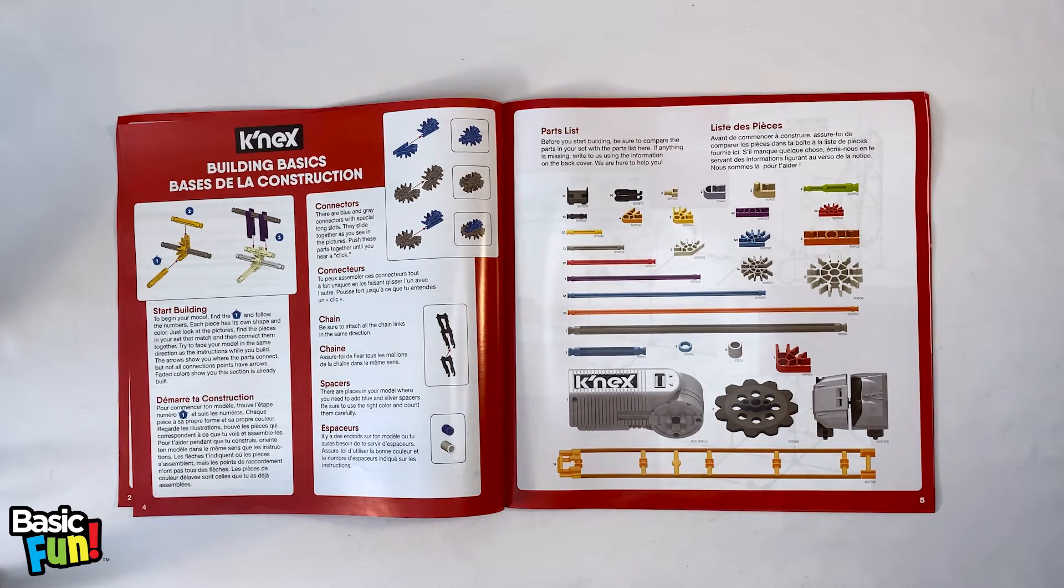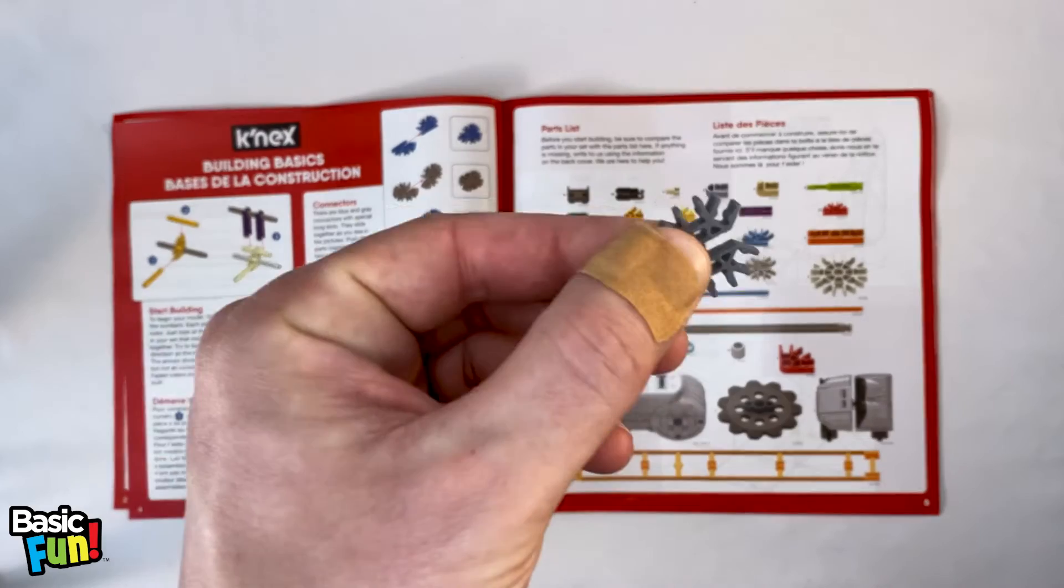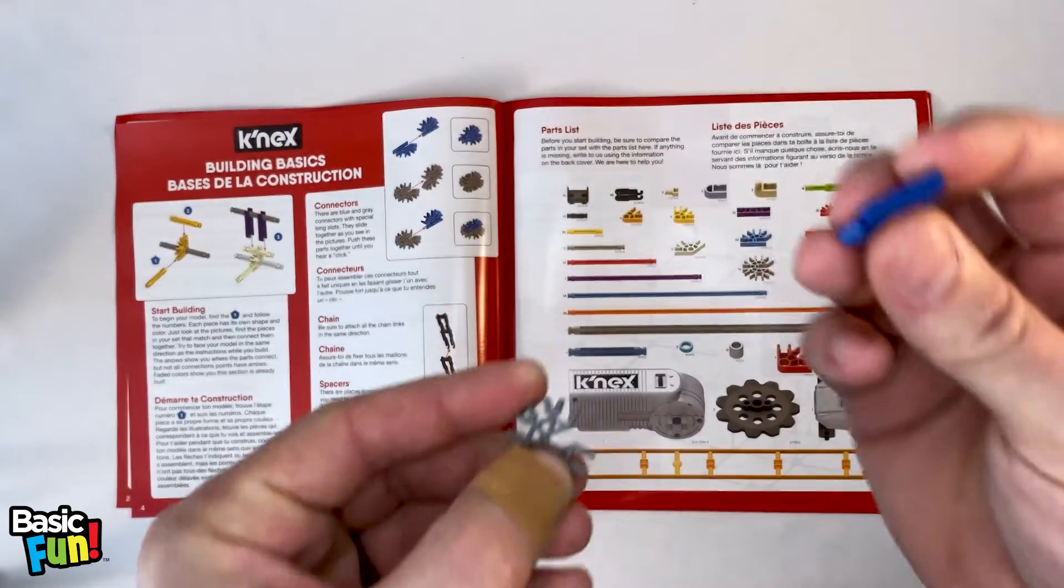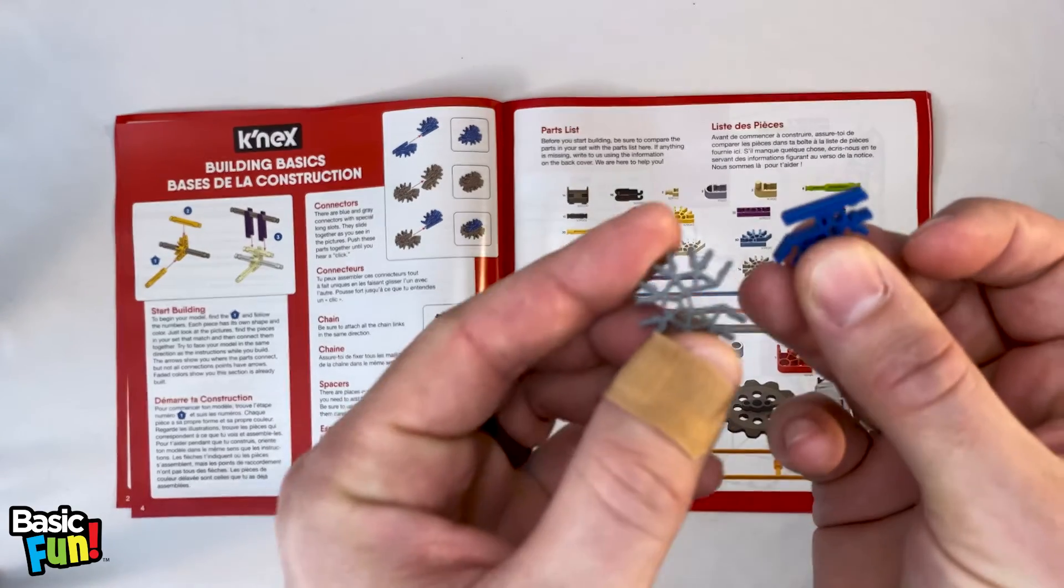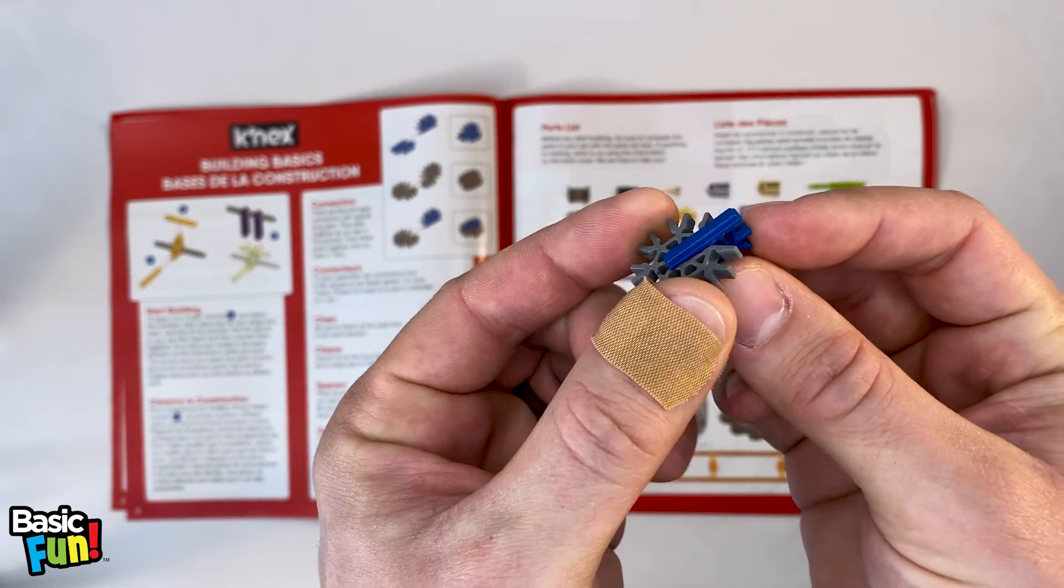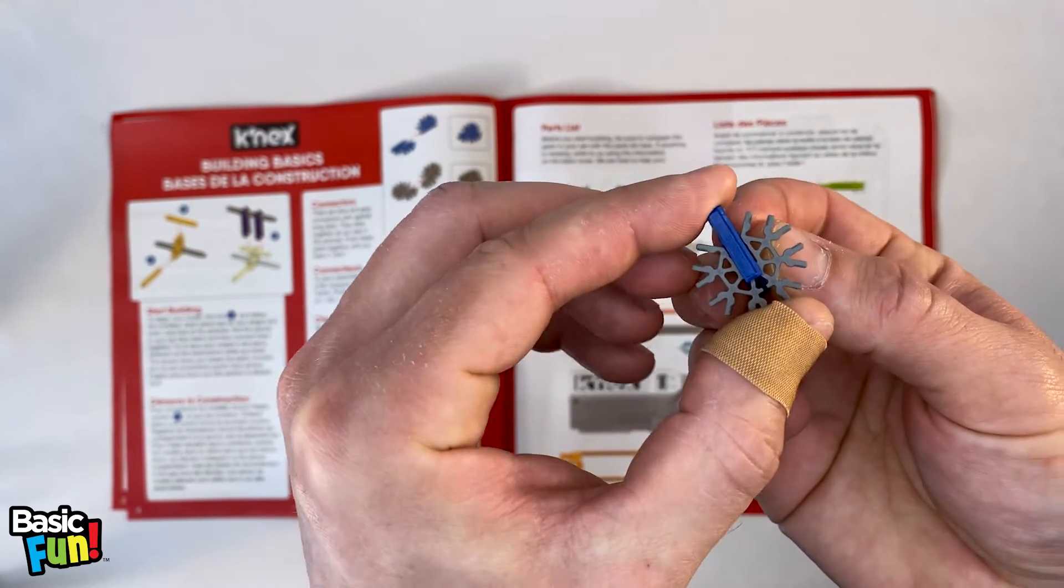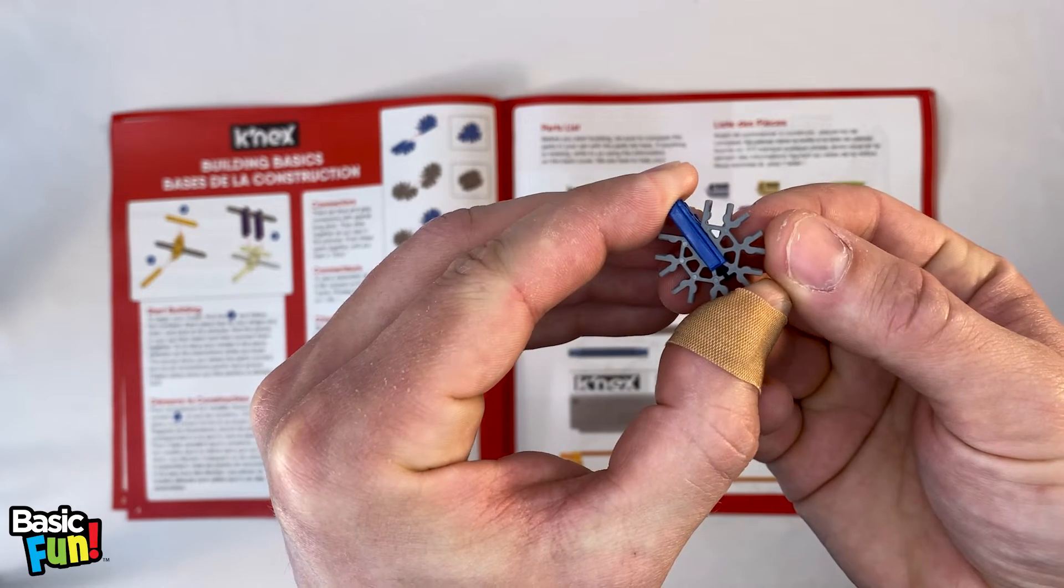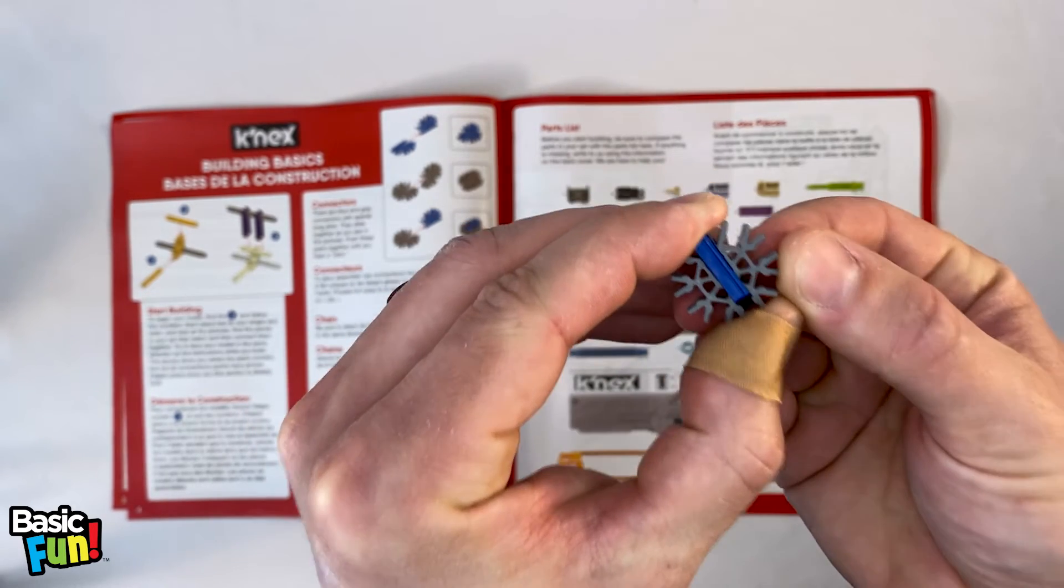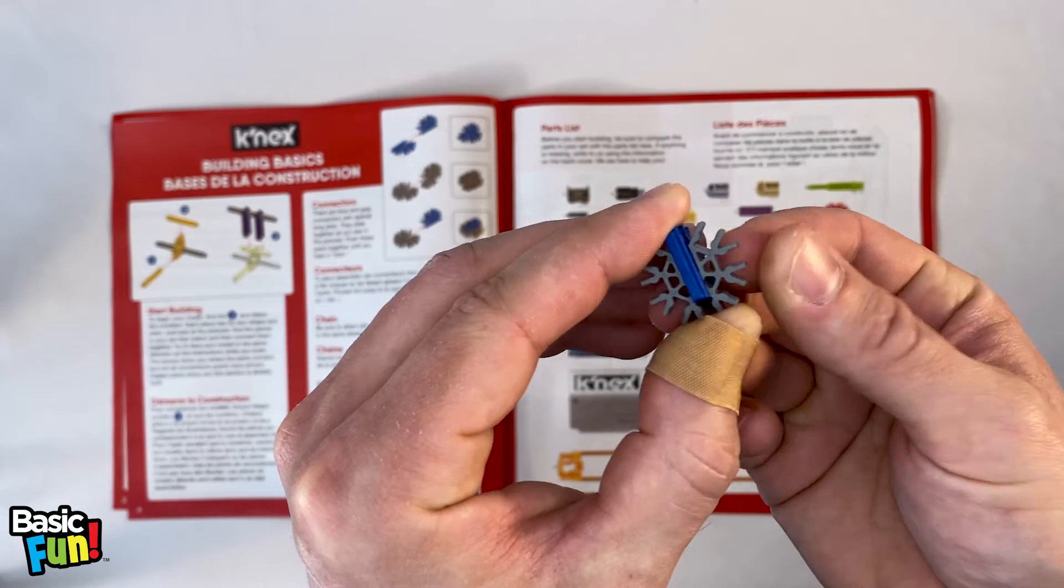Also note here are these special connectors called four-slot connectors and seven-slot connectors. These specific connectors allow Kinex 2D shapes to turn into 3D structures. So if I take a seven-slot connector and take a four-slot connector, you'll see that you can slide them together really easily. Once you get them to this point, just take your thumb and your index finger and then press together. You'll hear that click and that ensures that they're fully engaged.